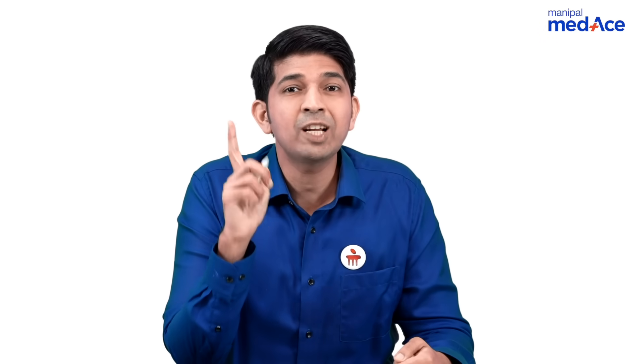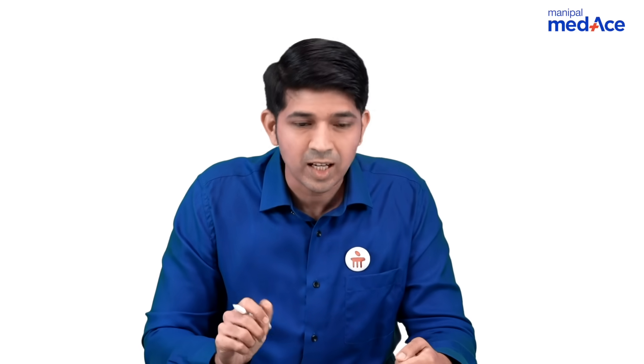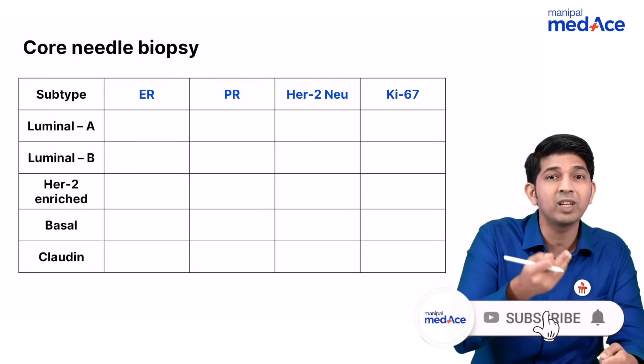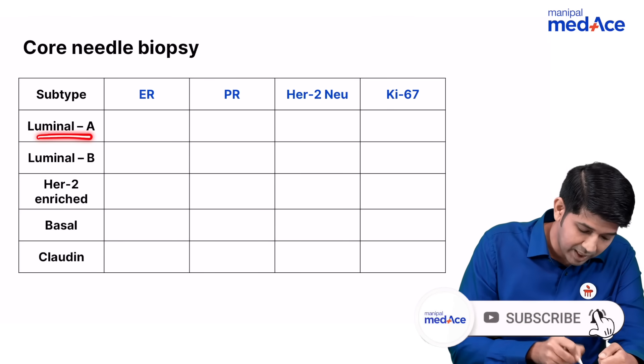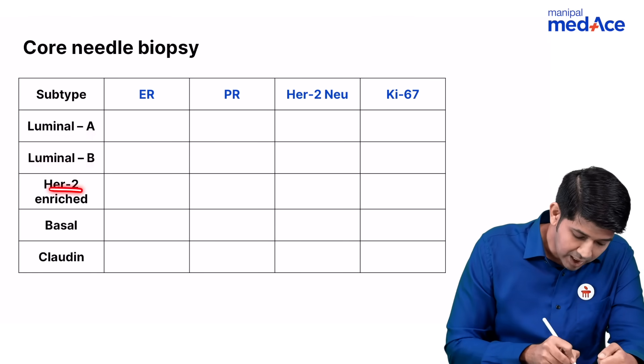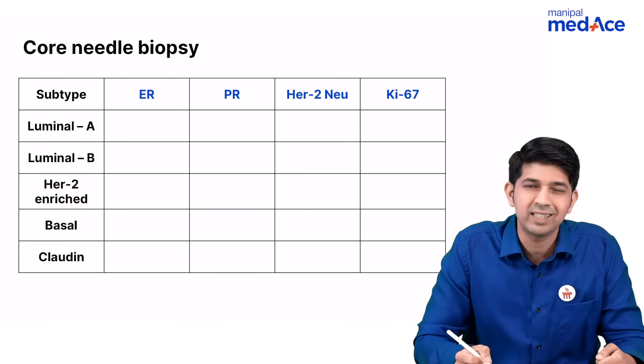In the pathological assessment, you're going to do a core needle biopsy. In core needle biopsy, you're going to ask for hormone receptor status, which is part of your IHC. Based on your IHC results, you're going to classify or subdivide the molecular typing as Luminal A, Luminal B, HER2-new enriched, Basal, and Claudin subtype.